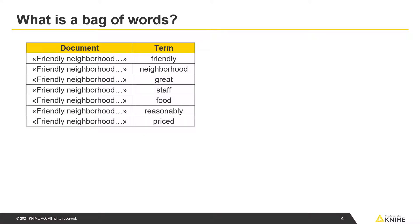The bag of words of the first document would have the words friendly, neighborhood, great, staff, food, reasonably, and priced.